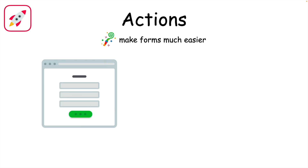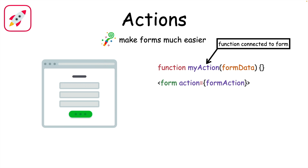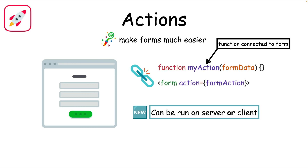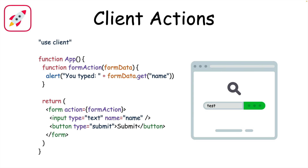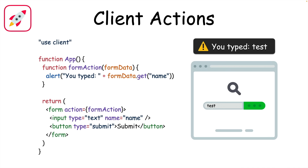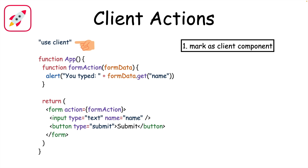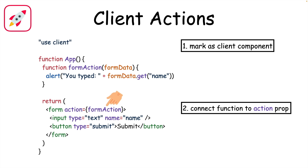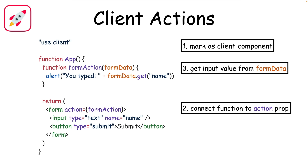Actions are a great new feature that make working with forms a lot easier. Actions are just functions that are called when a form is submitted — these functions are connected to the action prop of any form element. With React 19, actions can now be executed on the server or client. Here's a simple client action example where we're alerting the user what they typed into an input. You first write 'use client' at the top of your file to make sure it runs on the client, then connect the formAction function to the action prop of the form. If you name the input, you can access the input's value by writing formData.get(name).